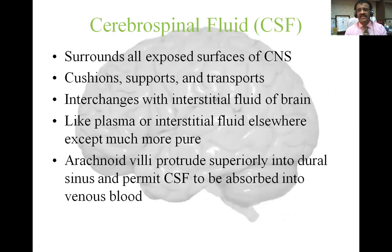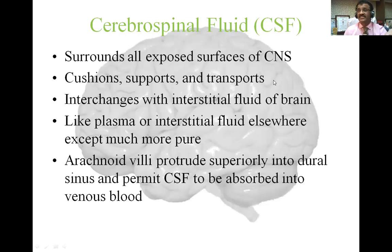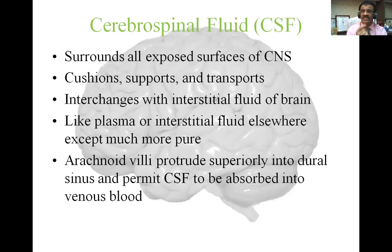We have finished the study of the ventricular system of the brain. Any ventricle can be a question in the exam, including the choroid plexus, which forms the CSF. CSF is a tissue fluid — it replaces lymph inside the head. There is no lymphatic system in the brain; CSF is present only in the brain. It surrounds all exposed surfaces of the brain and spinal cord, from inside and outside. CSF cushions, supports, and transports nutrients and waste products. It interchanges with interstitial fluid of the brain. Like plasma or interstitial fluid elsewhere, but much purer, because the brain is the most vital organ.